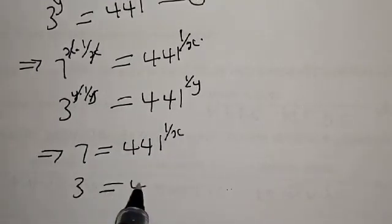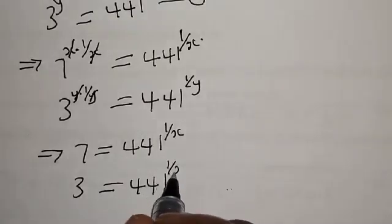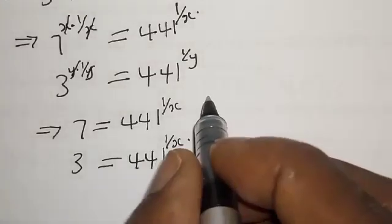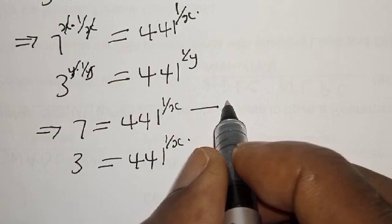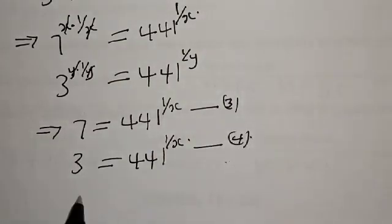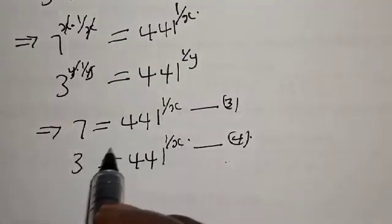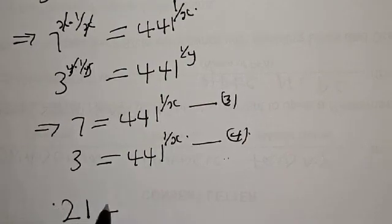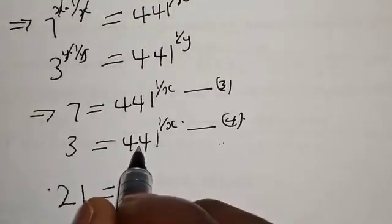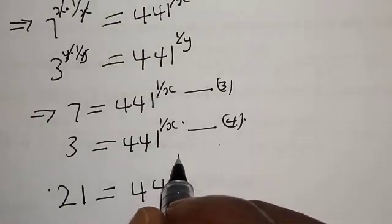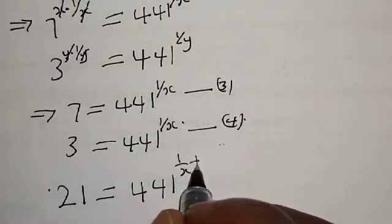Now let's multiply equations 3 and 4 together. Multiplying the left-hand sides first: 7 times 3 equals 21. On the right-hand side, since they have the same base we have 441 raised to power 1 over x plus 1 over y.